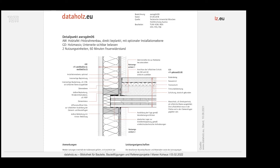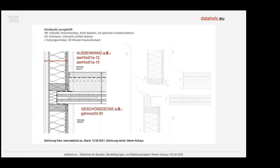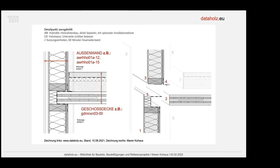In dieser zweidimensionalen Zeichnung wurde versucht, wenn man genauer hinschaut, zu zeigen, wo genau welche Abklebung ist, wo genau eine Fuge von einem vorgefertigten Element liegt. Wenn man so ein bisschen in die Denke reinkommt, kann man den Vorfertigungsgrad ablesen, in der Hoffnung, dass man als Planer auch mehr versteht, wie man dieses Detail konstruieren muss.